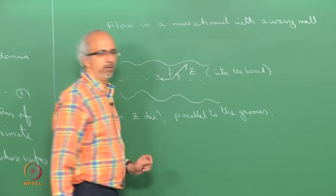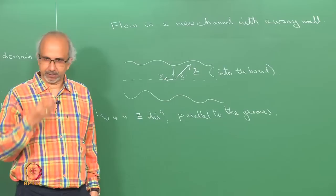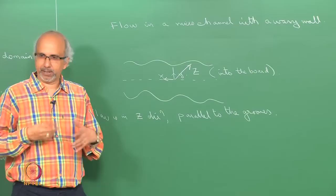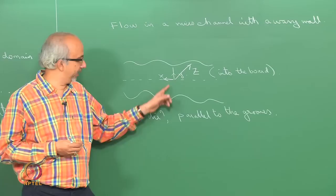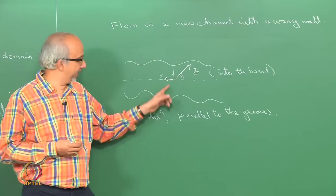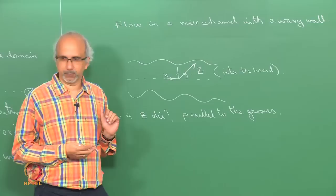Why would anybody be interested in a problem of this kind? Sometimes when you are talking about flows in micro-channels, the Reynolds numbers are so low that mixing is very poor — the flow is laminar. So when you impose some surface roughness, you can possibly induce not turbulence, because the Reynolds number is still low, but mixing — because you can have velocities induced in directions perpendicular to the flow direction, in the x and y directions.